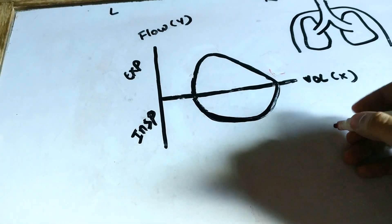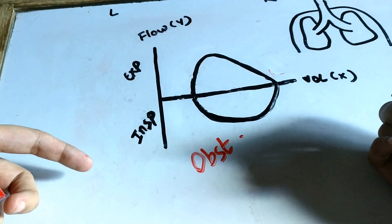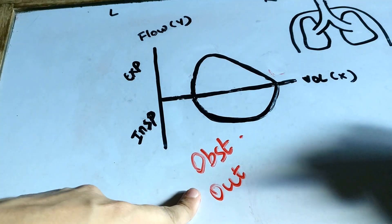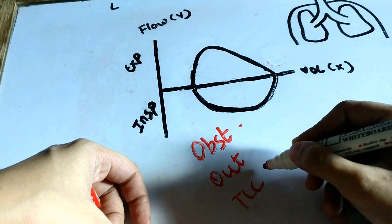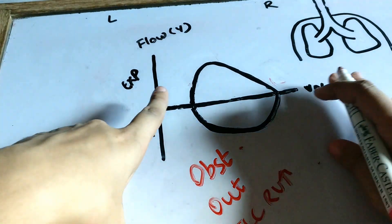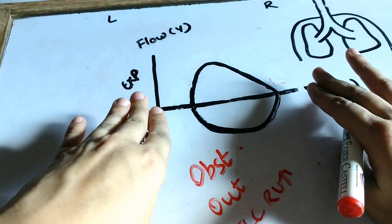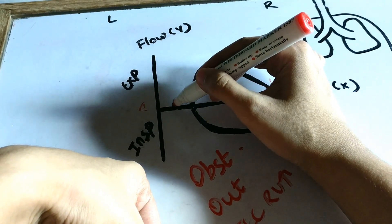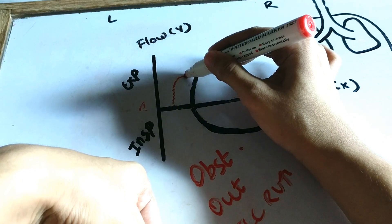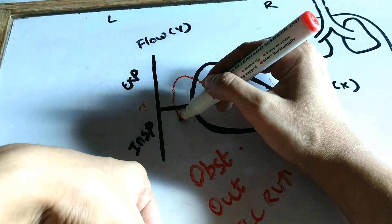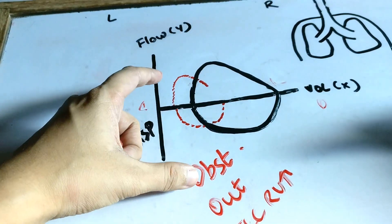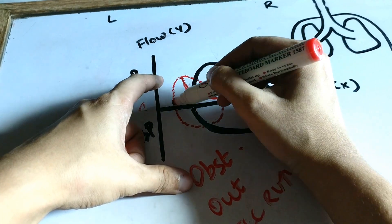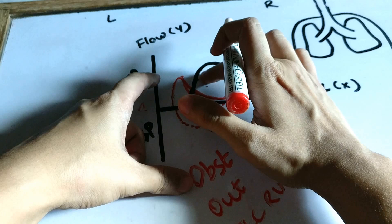Let's talk about obstructive lung diseases. In obstructive lung disease, there is a problem getting air out of the lungs — O for obstructive, O for out. So there is air trapping inside the lungs, meaning your TLC and your residual volume will increase. To show an increase in TLC and residual volume, the curve moves towards the left side because the bigger numbers are on the left. There will be decreased flow in both expiration and inspiration, and a very specific feature is a curved out or scooped out expiratory limb.